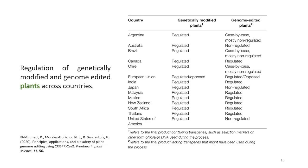This table lists the regulation of genetically modified and genome-edited plants across the globe. Countries covered include Argentina, Australia, Brazil, Canada, Chile, the European Union, India, Japan, Malaysia, Mexico, New Zealand, South Africa, Thailand, and the United States of America. Their positioning differs — in certain cases it is a case-by-case basis and mostly non-regulated, while in many other cases it is regulated or opposed, for example in European countries. The USDA declared in March 2018 that genome editing is the equivalent of conventional breeding in some instances and therefore does not require regulatory oversight within the American regulatory framework.